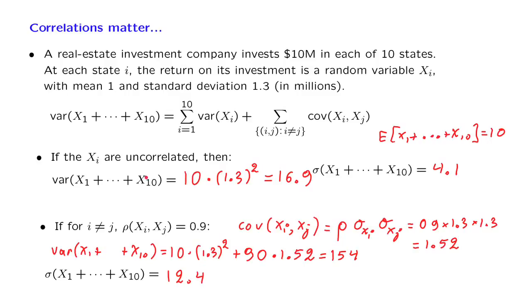So in the uncorrelated case, you're pretty certain that you will have a positive profit. But if the correlations actually turn out to be significant, then you're facing a very risky situation.